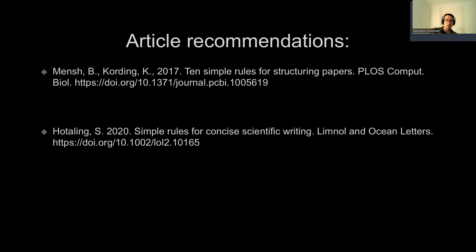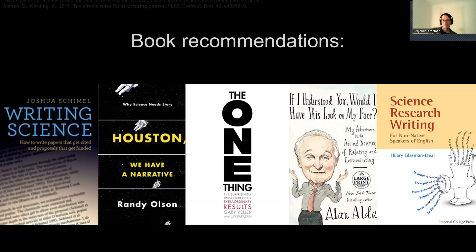Two articles I recommend: the first is published in 2017 in PLOS Computational Biology, called 'Ten Simple Rules for Structuring Papers.' The second was published in 2020 in Limnology and Oceanography Letters, called 'Simple Rules for Concise Scientific Writing.' I also have several book recommendations. The first is Joshua Schimel's 'Writing Science,' which gives the best broad overview specifically in the context of writing, and it's definitely one of the main staples in science communication coursework at universities and institutes.